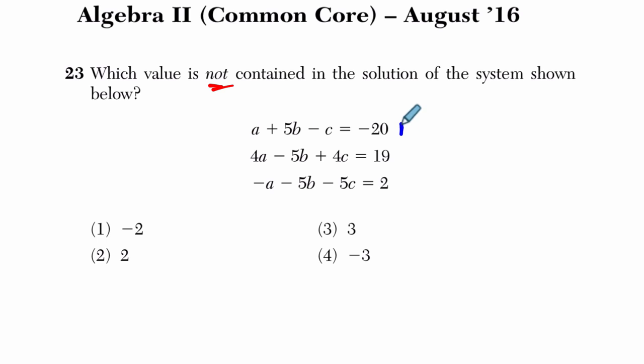Look at our first, we're going to call this row 1, row 2, and row 3. If I add row 1 plus row 3, what am I going to get? a plus negative a, those are opposites, right? That's going to give us row 1 plus row 3, I'm going to put an arrow, will give us 0 a's.